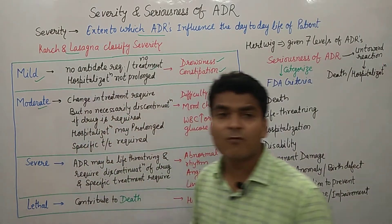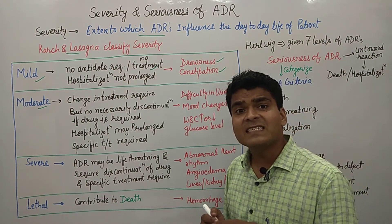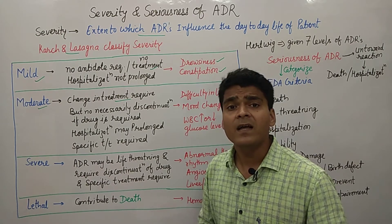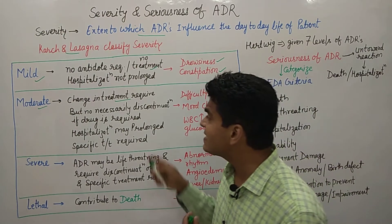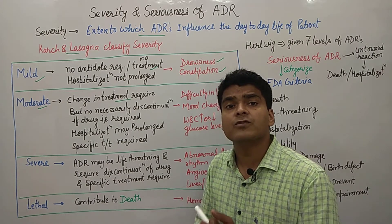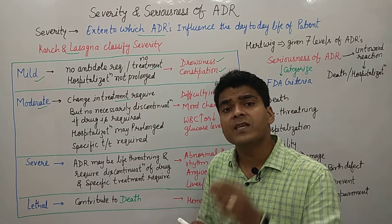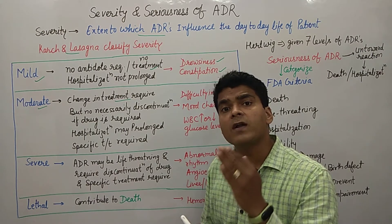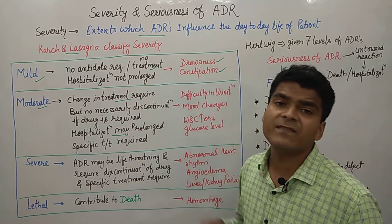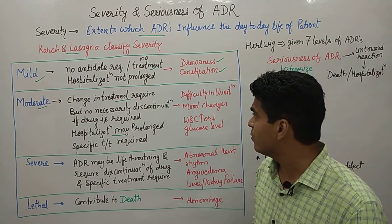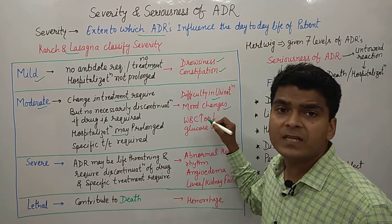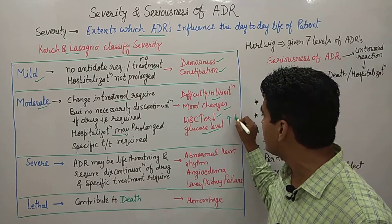Now looking at moderate adverse drug reactions. Moderate ADRs require a change in the treatment. However, it is not necessarily a discontinuation of the drug. The frequency or dose may be reduced instead. Hospitalization may be prolonged, and specific treatment may also be required to subside the adverse drug reaction. Examples include mood changes, difficulty in urination, and increase or decrease in WBC count, or glucose level changes.